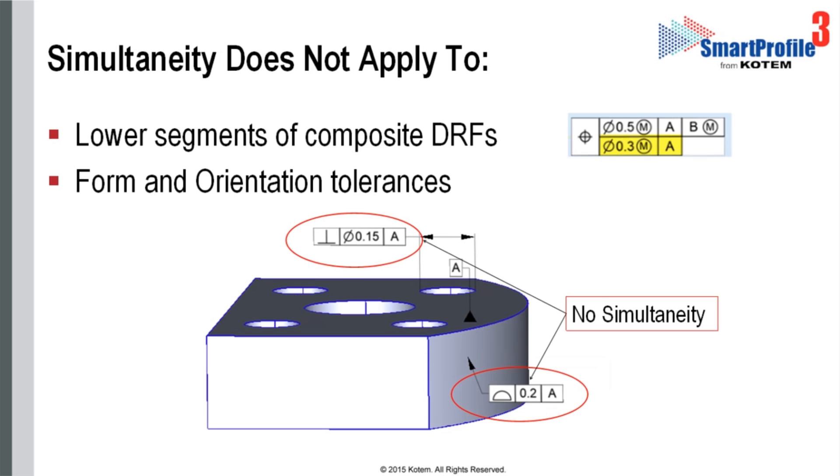Secondly, simultaneity does not apply to form and orientation tolerances. In the example shown here, simultaneity does not apply to the orientation and profile callouts, even though datum A is referenced in both FCFs in the same manner.